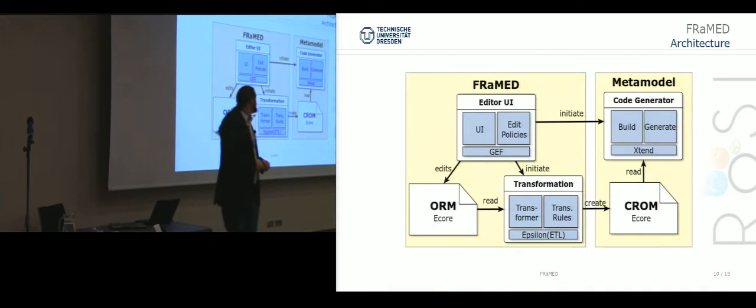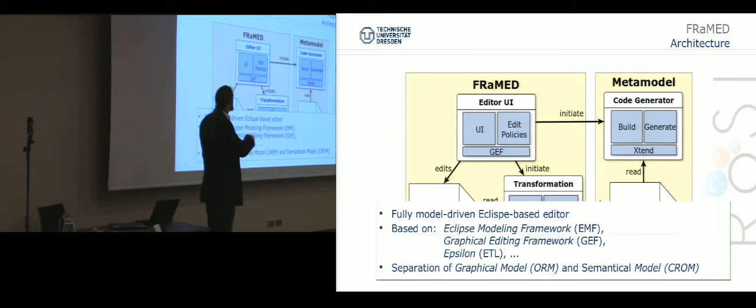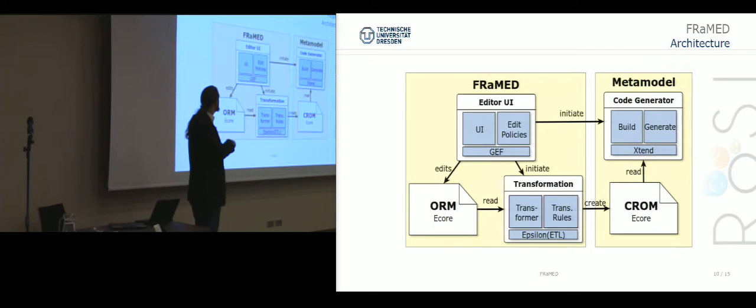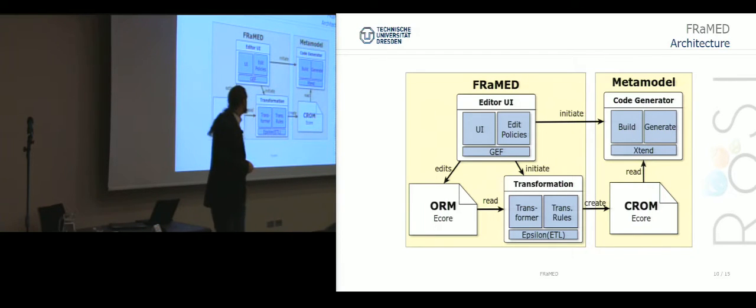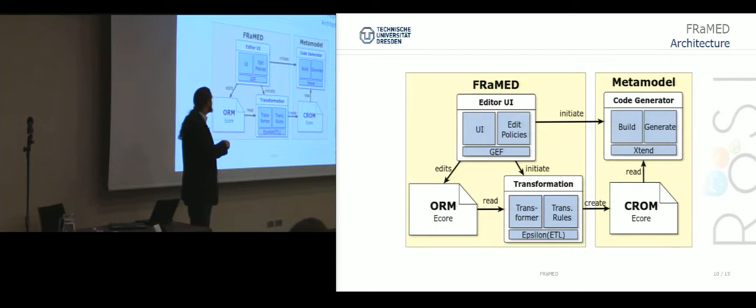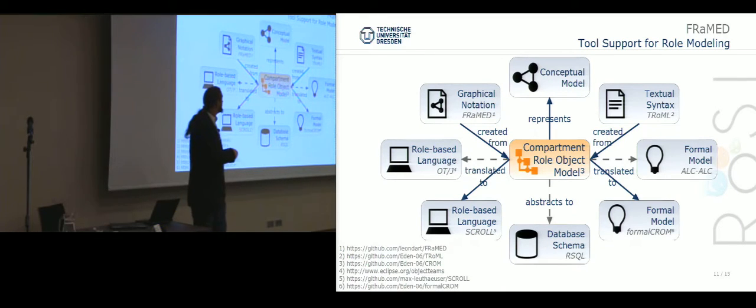The overall architecture is based on Eclipse, based on the GEF framework and the Eclipse Modeling Framework. It uses the Epsilon transformation language to facilitate the separation of the graphical model and the compartment role object model, which is an EMF representation of the formal model I've presented last year. In this way we can separate all the layout-specific stuff, all the bend points and rectangles, and have a clean semantic metamodel. From this metamodel we can build our tool suite.